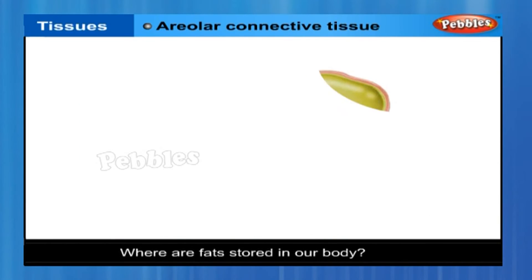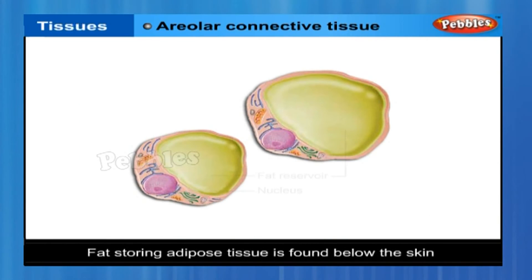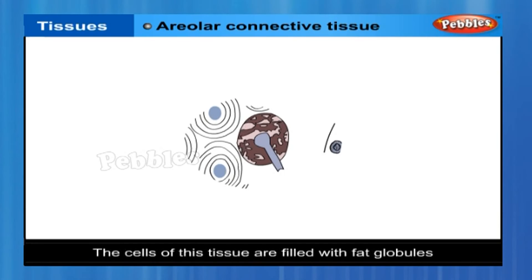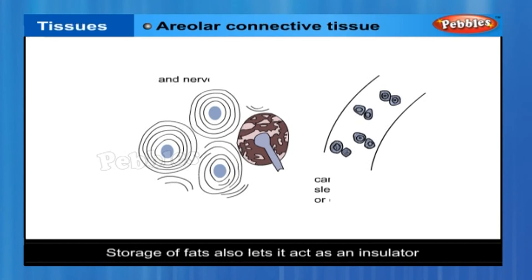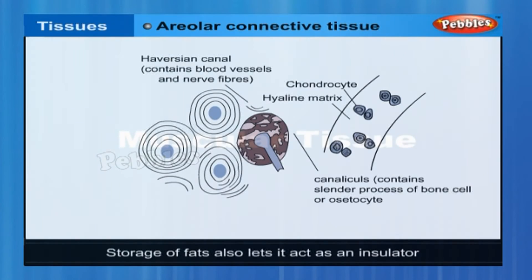Where are fats stored in our body? Fat-storing adipose tissue is found below the skin and between internal organs. The cells of this tissue are filled with fat globules. Storage of fats also lets it act as an insulator.